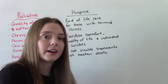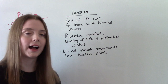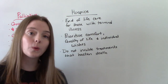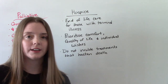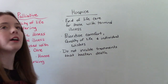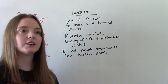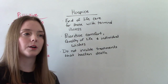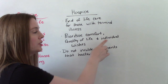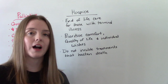Now, hospice care specifically — hospice care is end of life care. So patients who are on hospice will be receiving palliative care. The goals of hospice care, the priorities, are comfort of the patient, quality of life, and respecting the individual wishes of the patient. So maybe there are different treatments or techniques that the nurse might want to do, but the patient says they don't really want to do that — respecting their wishes is part of hospice care.